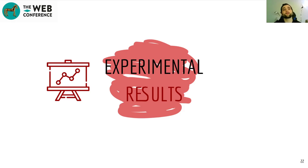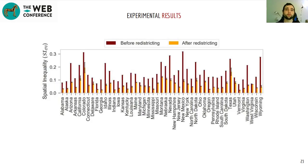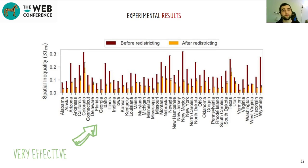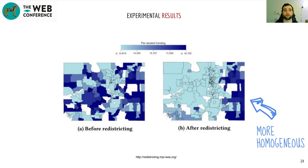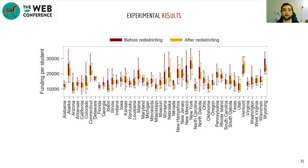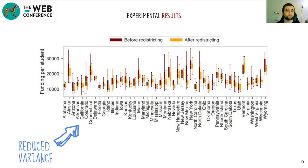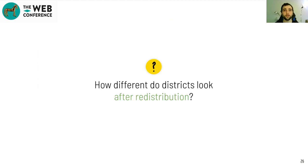How effective was the algorithm in practice? We were able to consistently reduce spatial inequality across all states. Looking at Colorado — initially one of the states with the highest spatial inequality — we see a much more homogeneous funding throughout the state after the algorithm was applied. Funding distributions across districts within the state became a lot tighter. The algorithm was not significantly constrained; it could redistrict any number of schools as long as it preserved the initial number of contiguous districts.